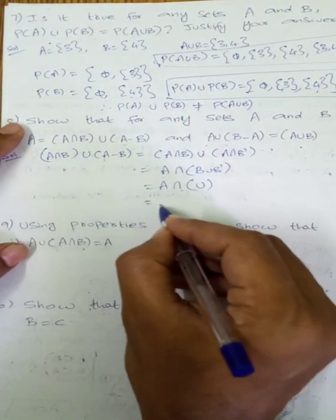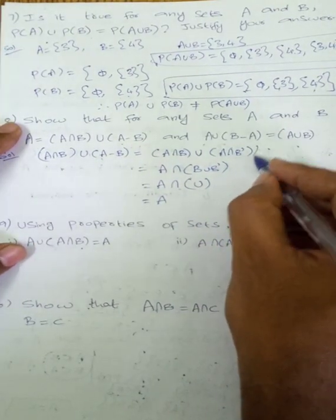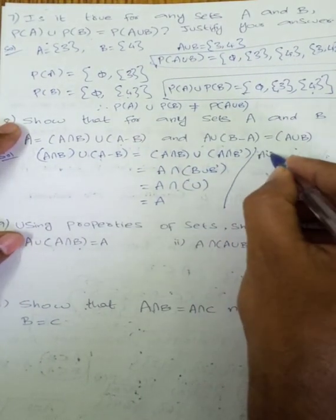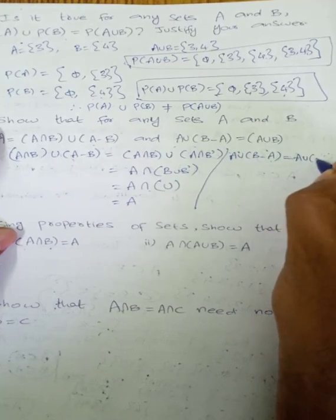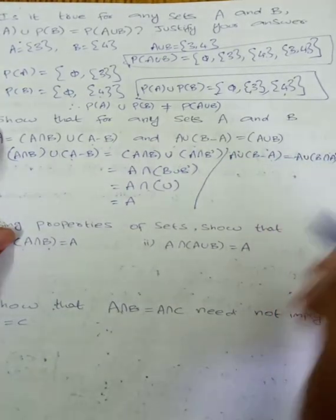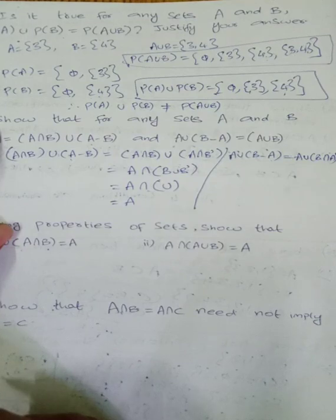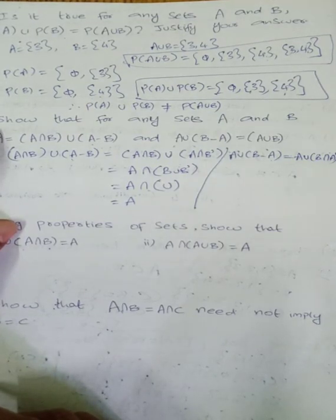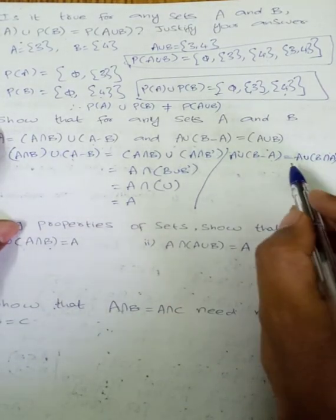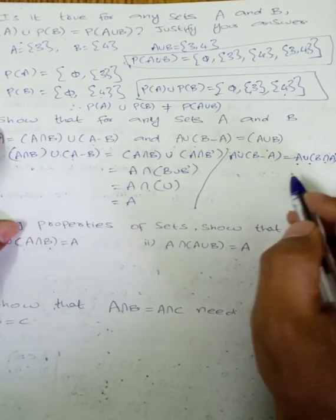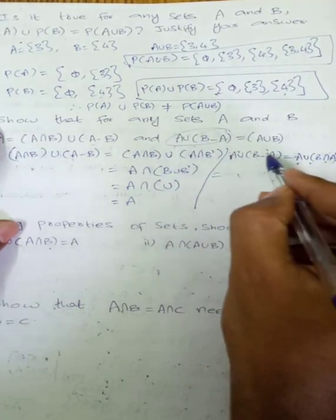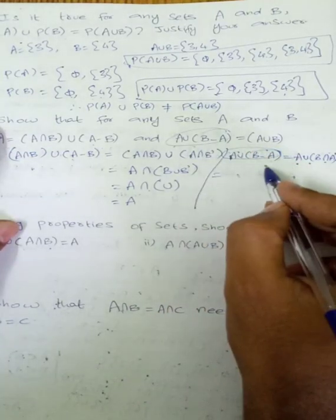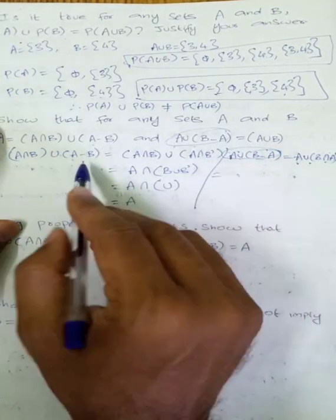So A intersection U equals A. And A union B minus A equals A union B intersection A complement. Using the concept: A union B intersection (A union A complement).